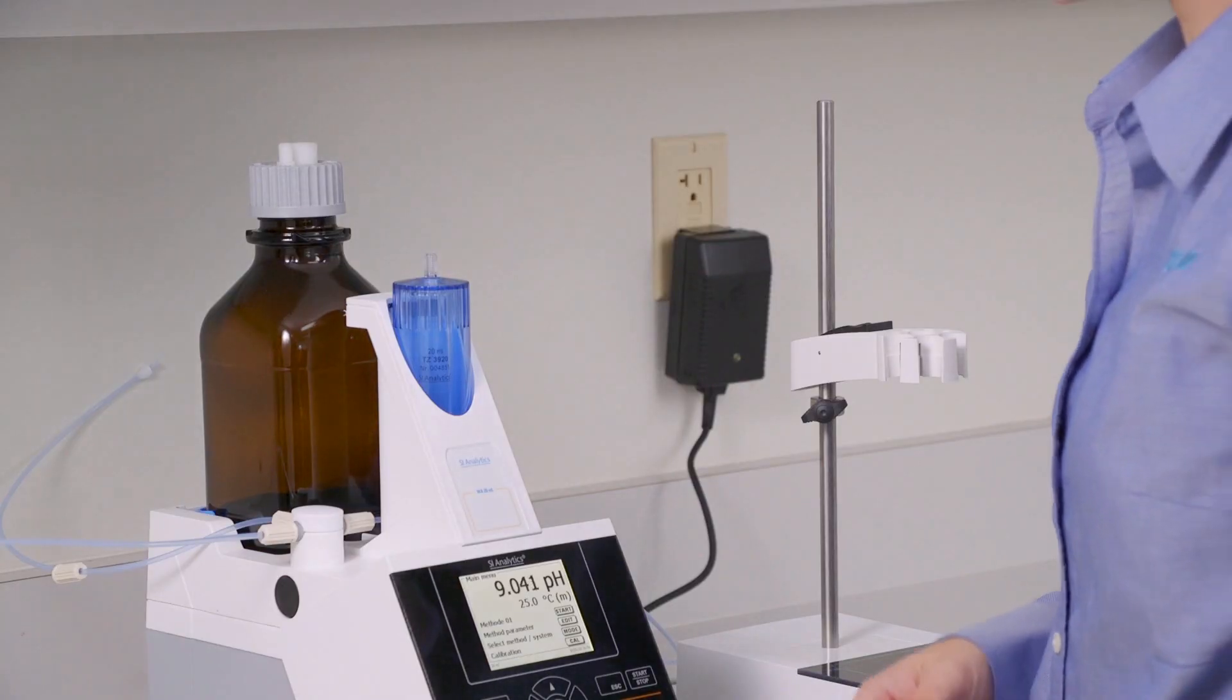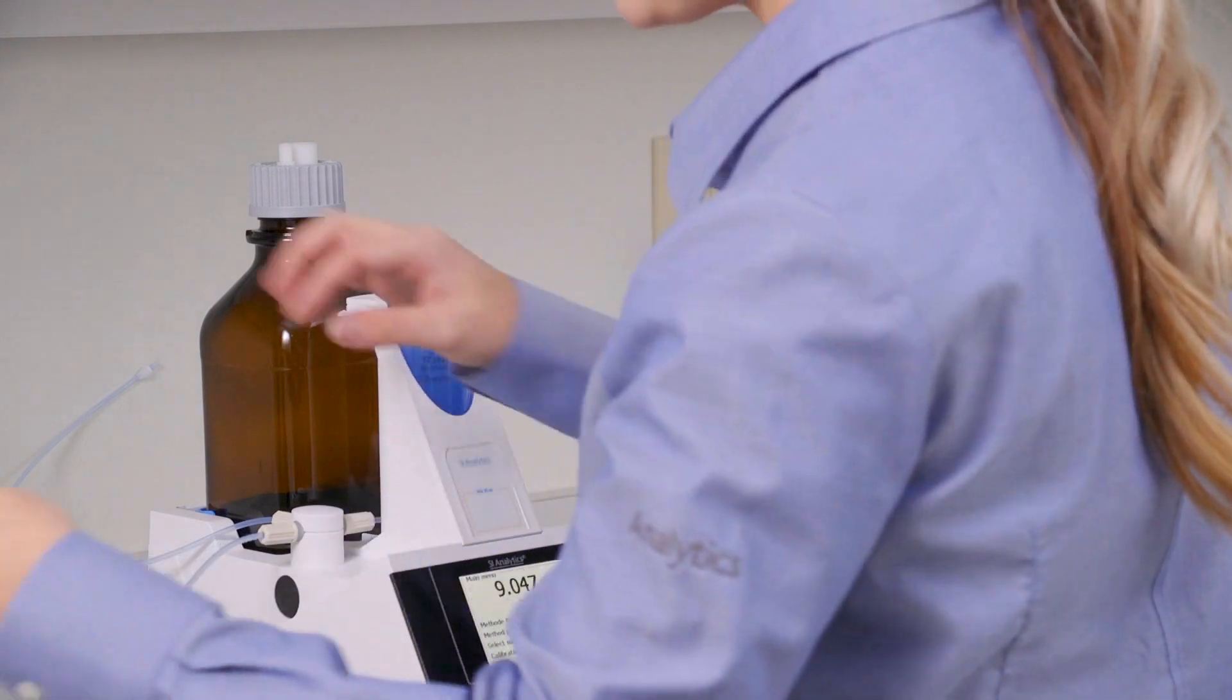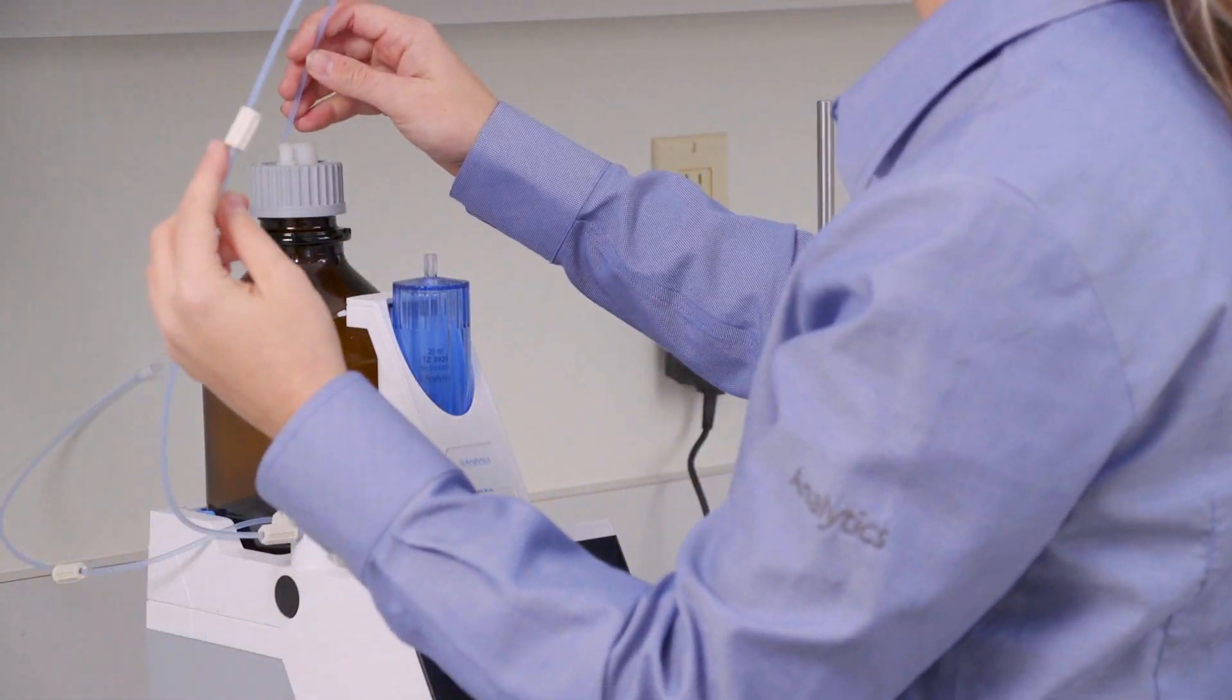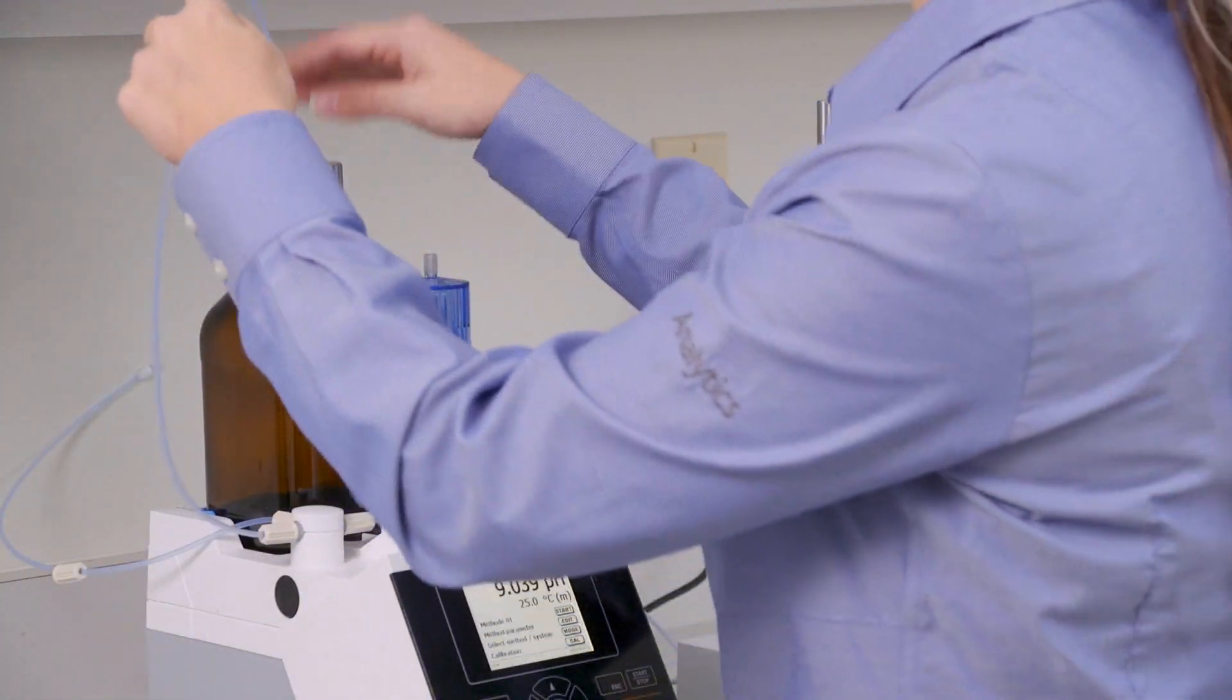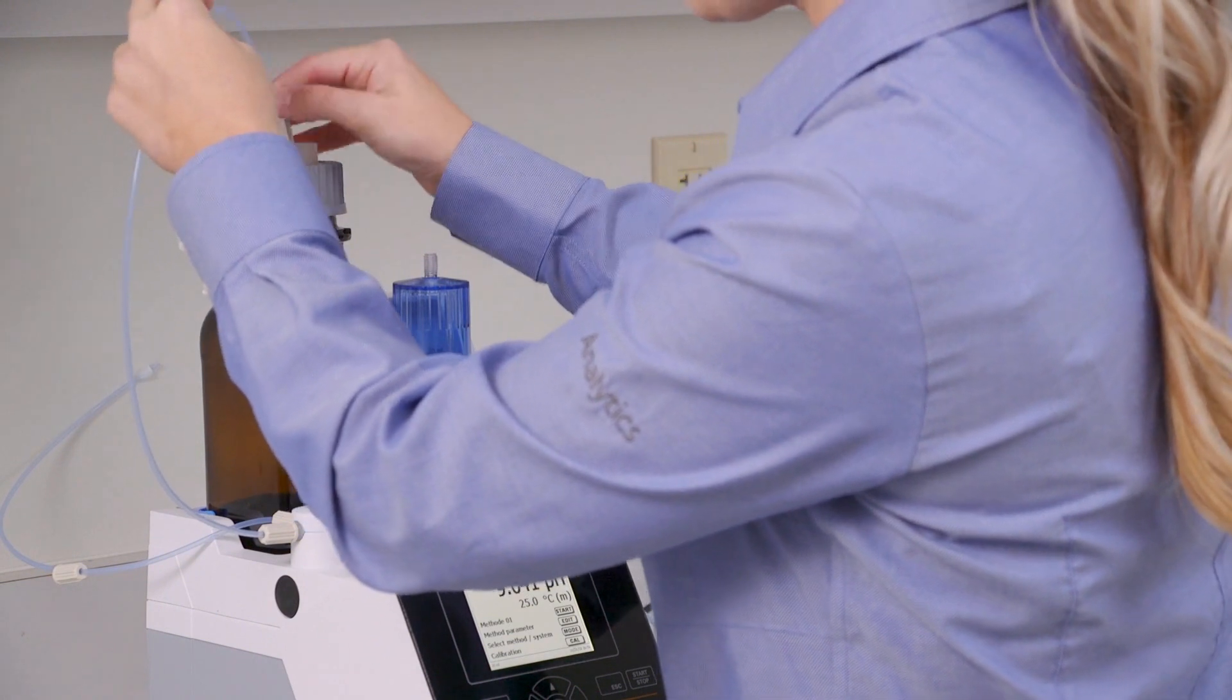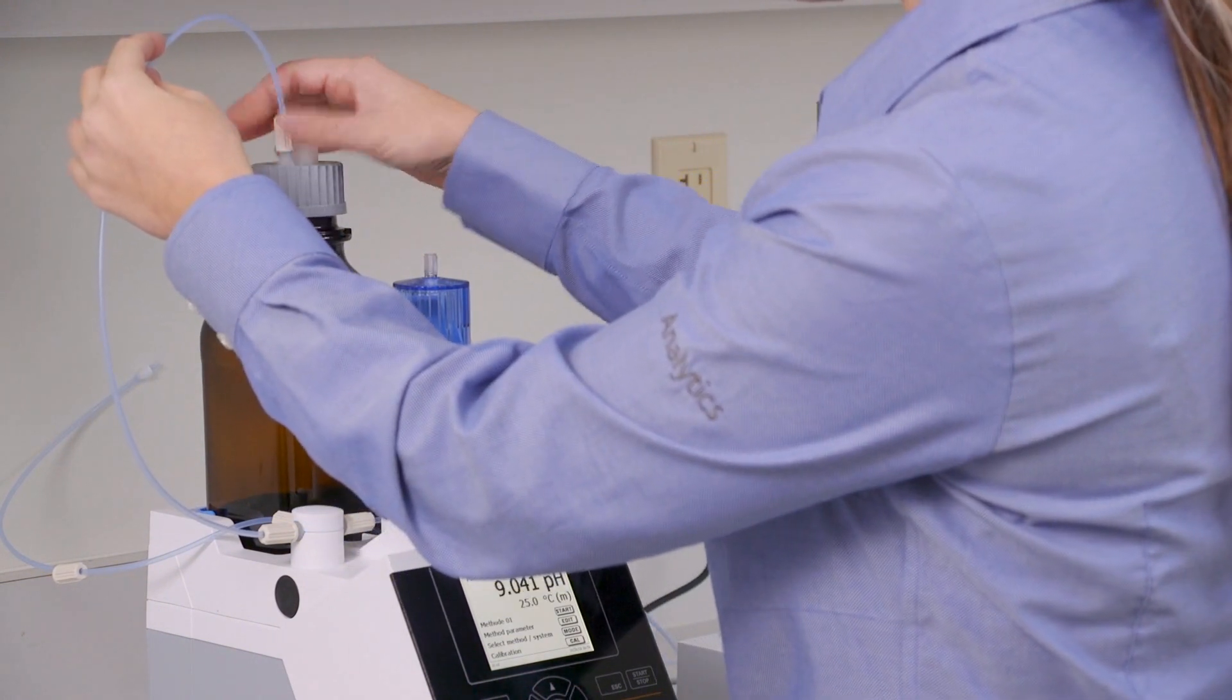Now we can get the rest of the tubing finalized. The tube on the far left side will go into the burette reservoir where the titrant is going to be. So just pull that through the bottle and then screw the thread on top.